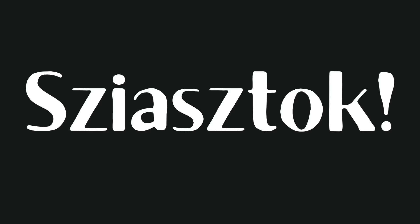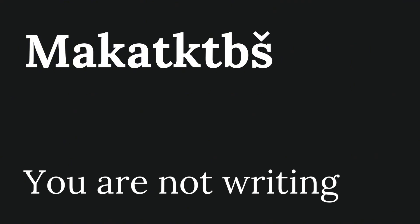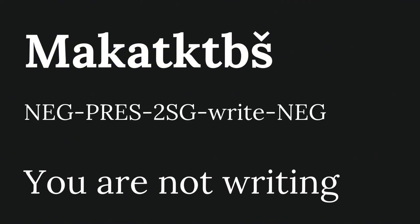Interlinear glossing is a way of providing more insight about how languages convey information beyond just translation. Take the Darija word maketik tibsh for example. A translation would just tell you that this means 'you are not writing,' but the gloss would tell you exactly how maketik tibsh means that.